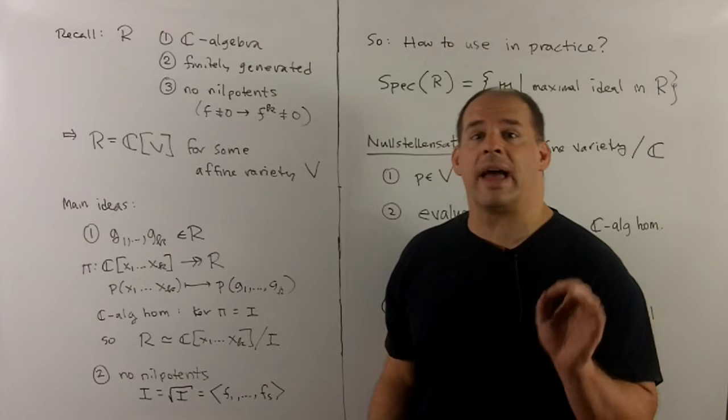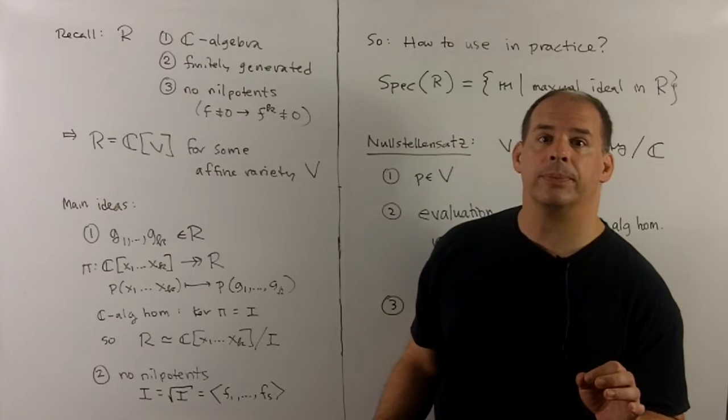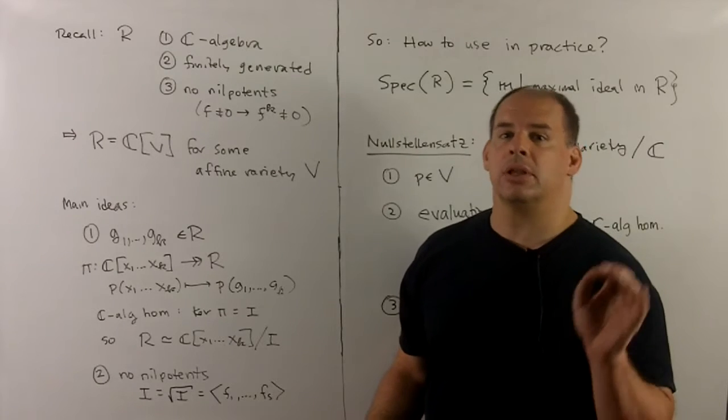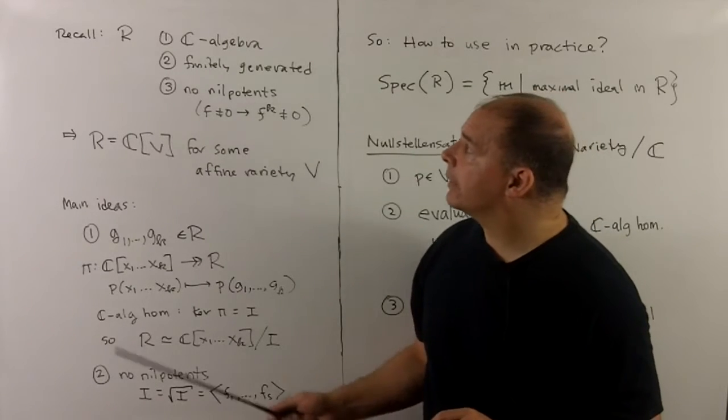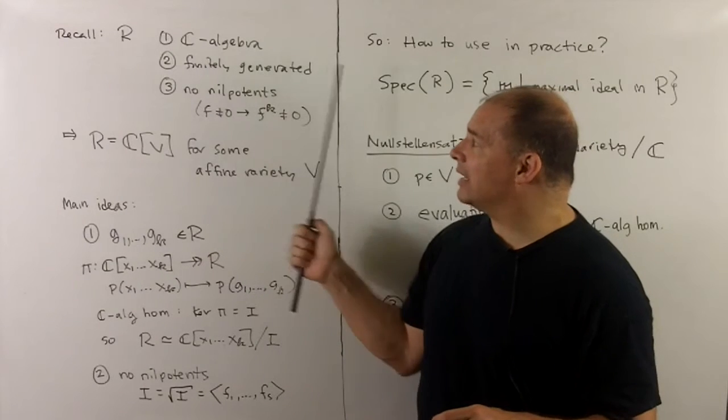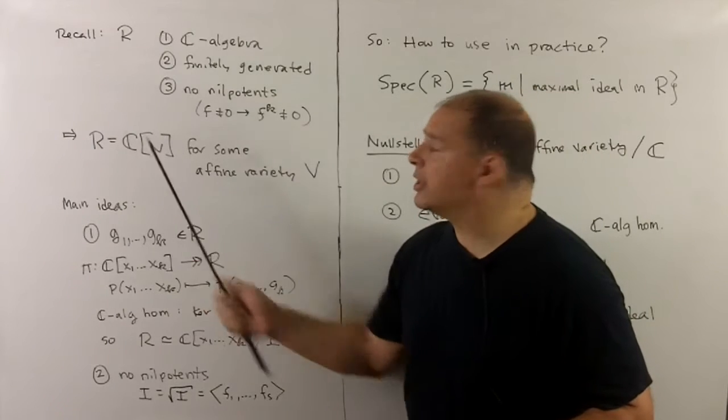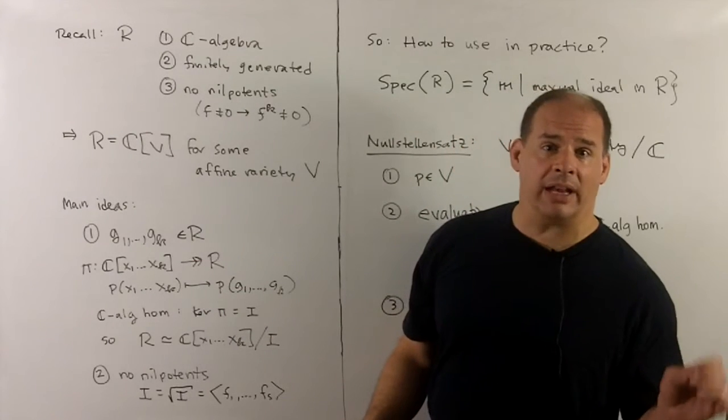We continue to develop ideas that allow us to pass from affine varieties to ring theory and back. First, let's recall a big result from last time. You'll have a ring R, which is a C-algebra, finitely generated, and has no non-zero nilpotents. Then R is the coordinate ring for some affine variety V.